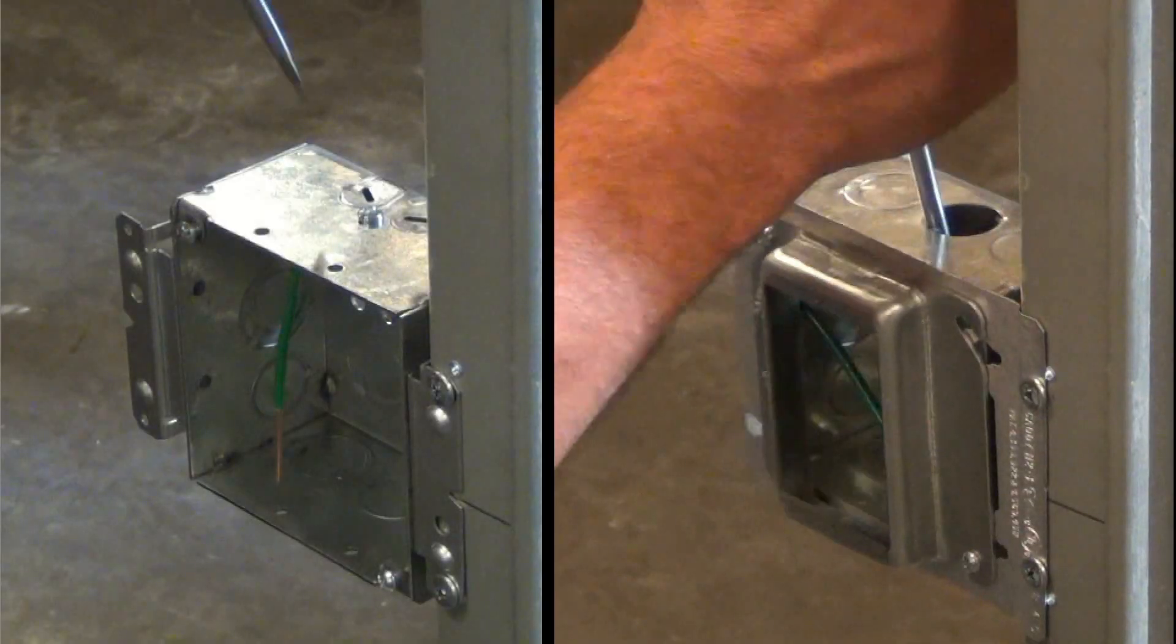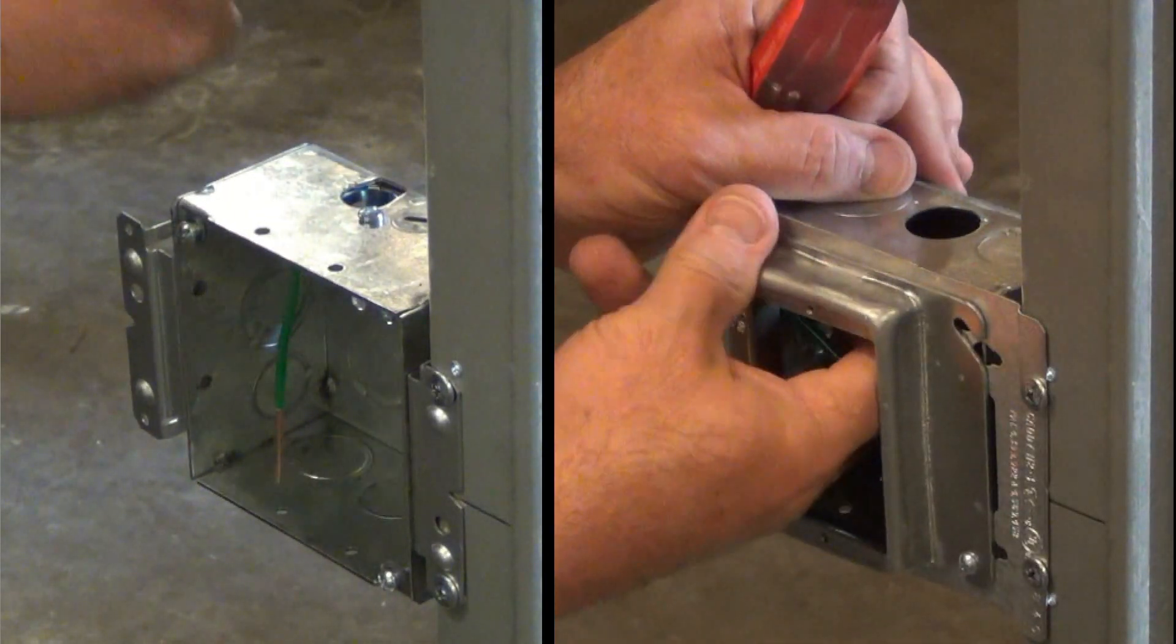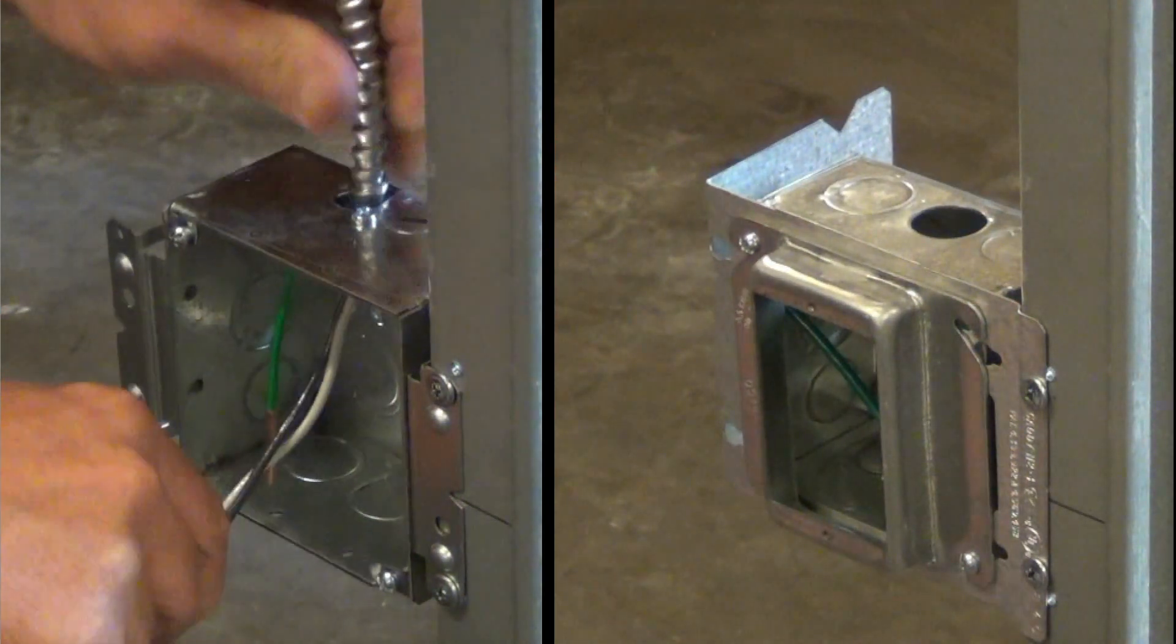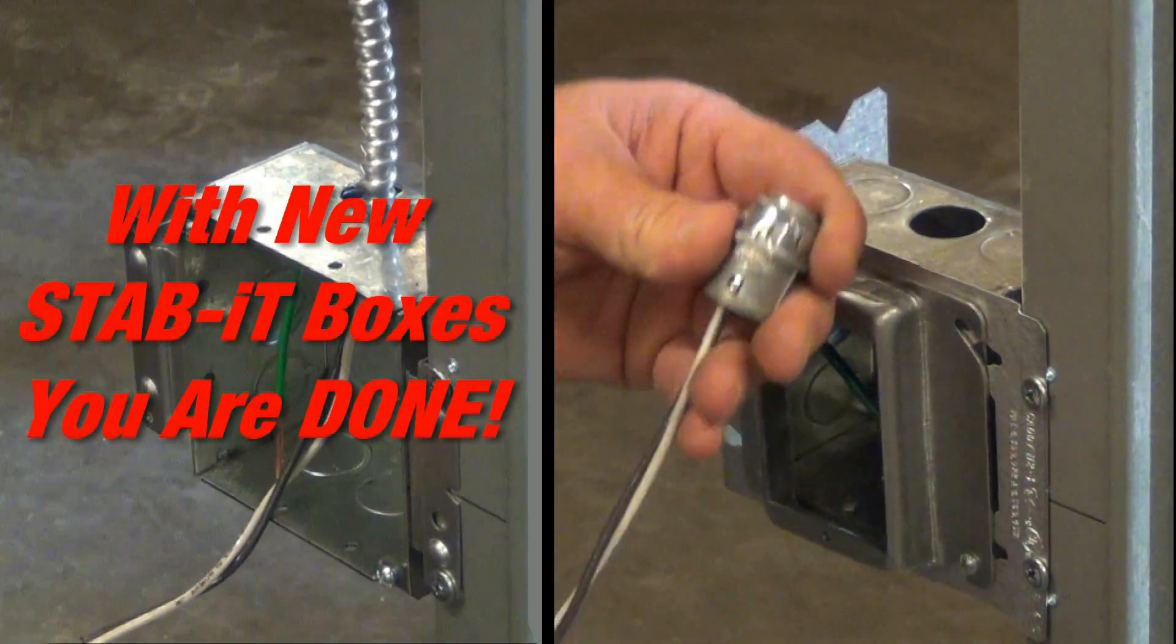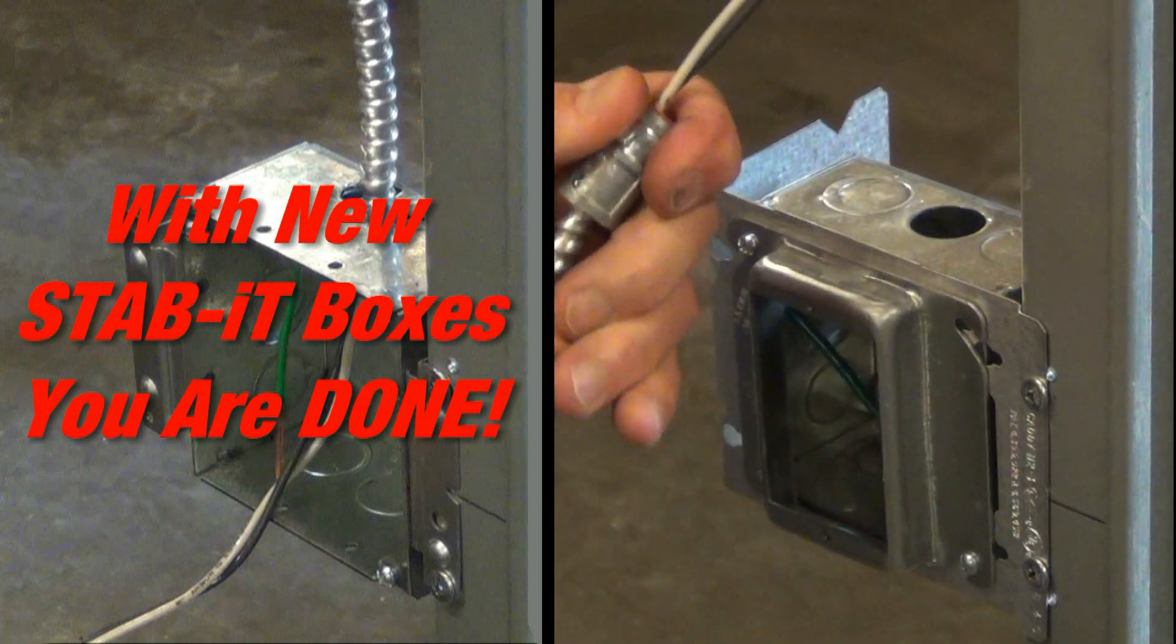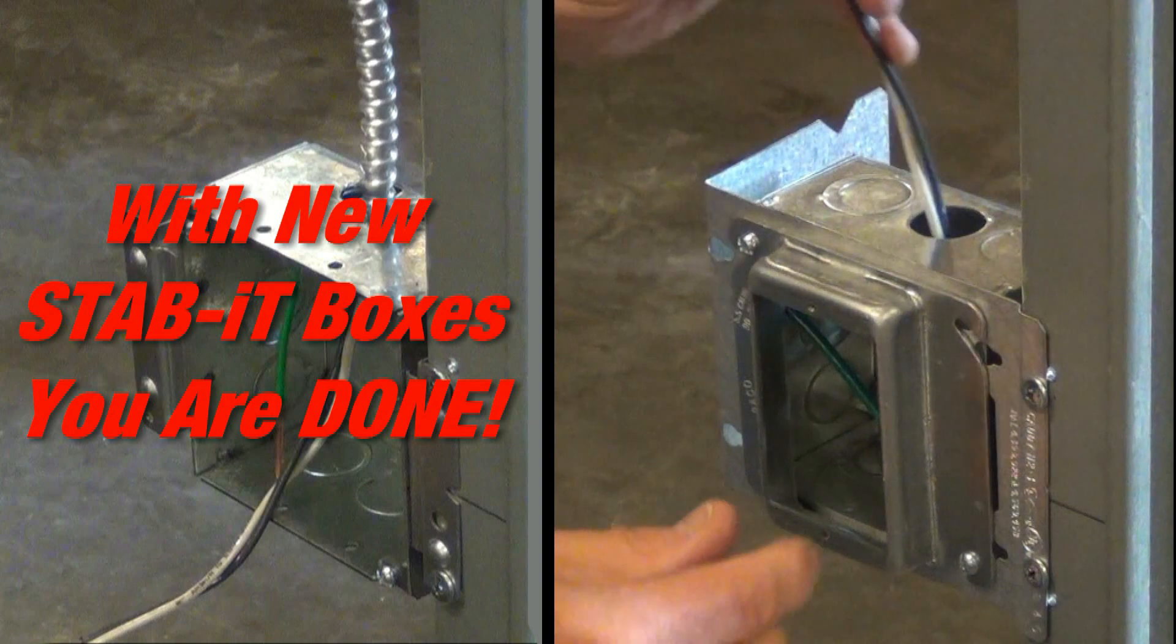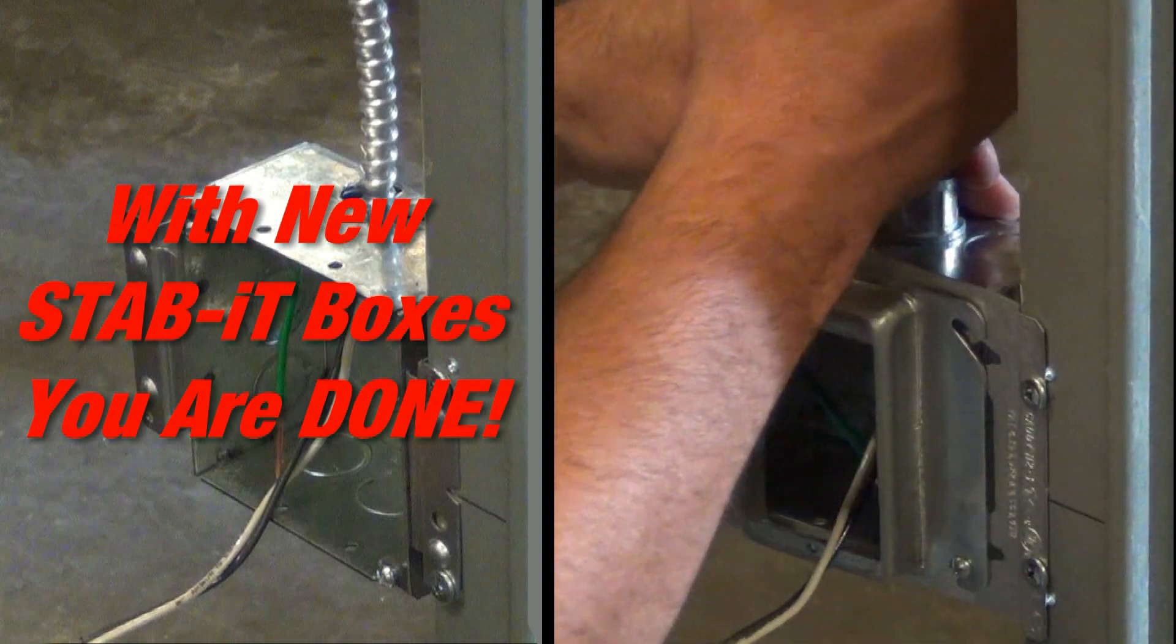In this side-by-side comparison, you can see that the pry-outs available with Stabit are faster to remove the knockouts, especially when mud rings are already installed. The pre-installed Stabit connector eliminates the extra labor and materials associated with traditional connectors. In fact, each cable terminated in a Stabit box is at least three times faster, increasing productivity and lowering install cost on the job site and in the prefab shop.